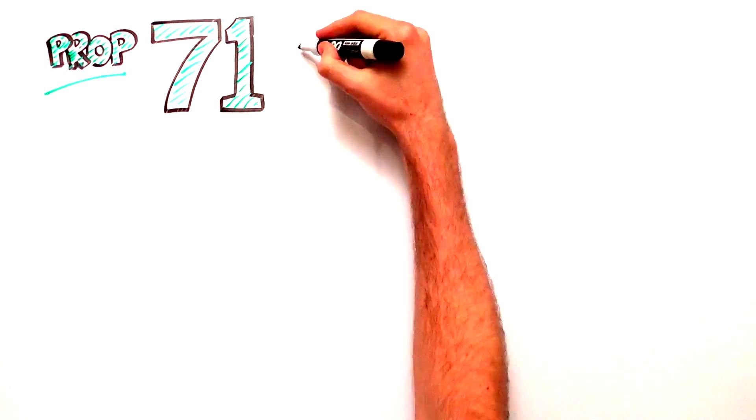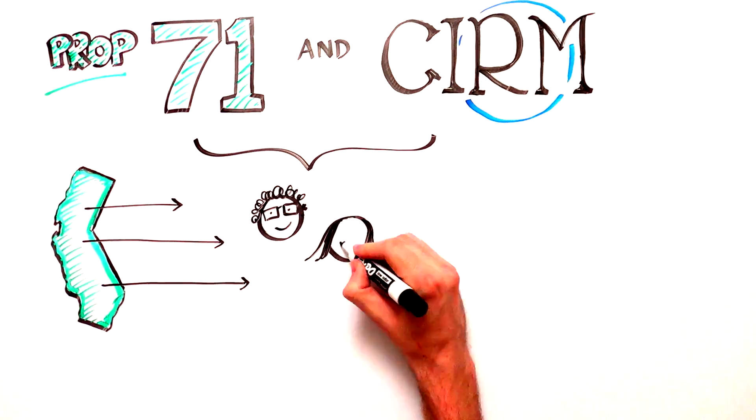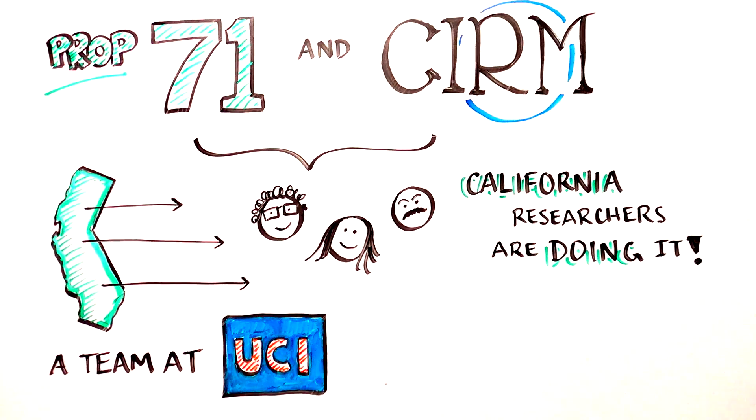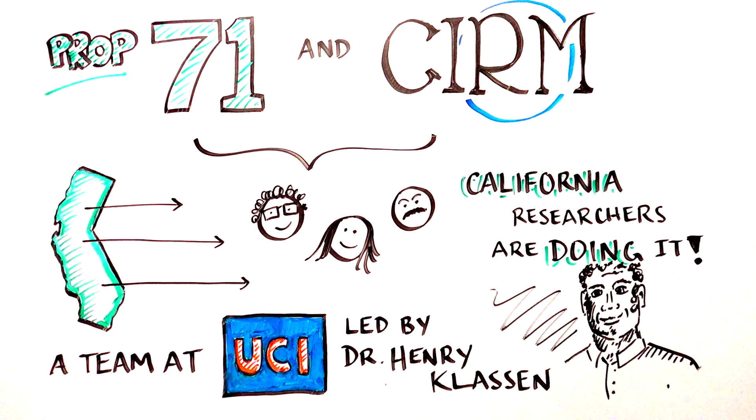With funding from Proposition 71 and the California Institute for Regenerative Medicine, California researchers are seeking to do just that. The team of scientists at UC Irvine, directed by Dr. Henry Claussen, are leading the charge.